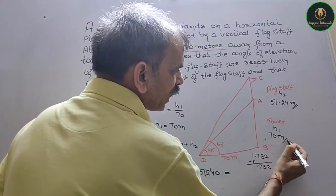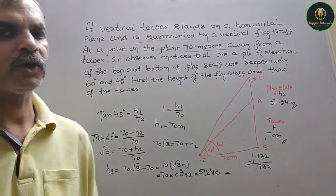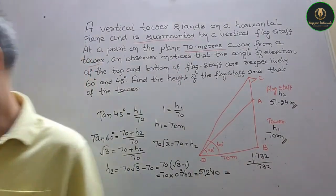The flagstaff is 51.24 meters and the tower is 70 meters. So this is how you solve this problem. Alright, thank you.